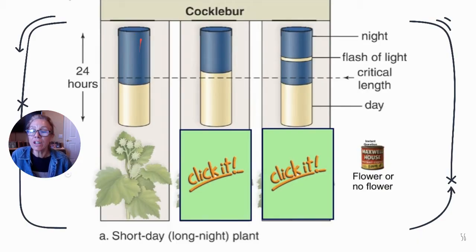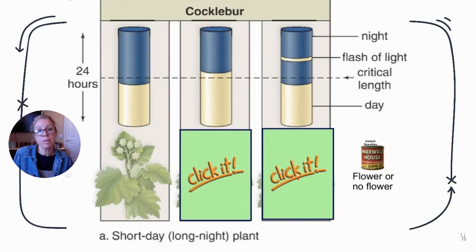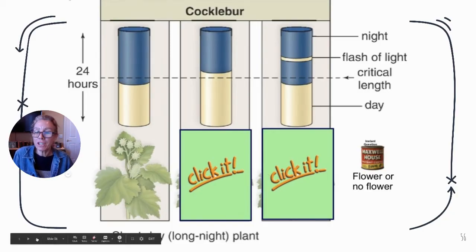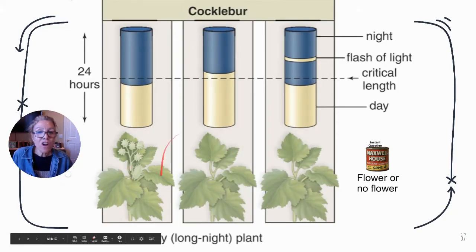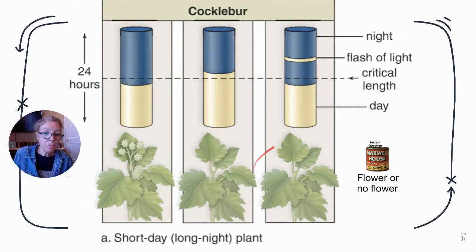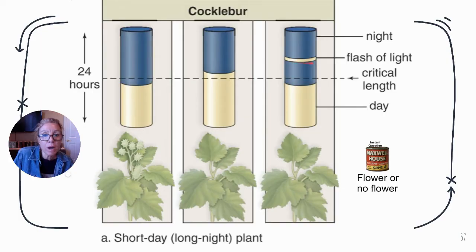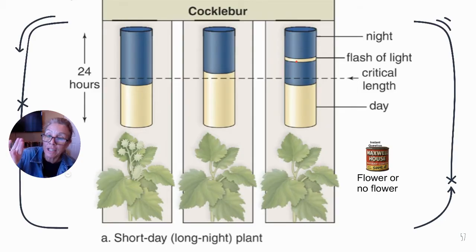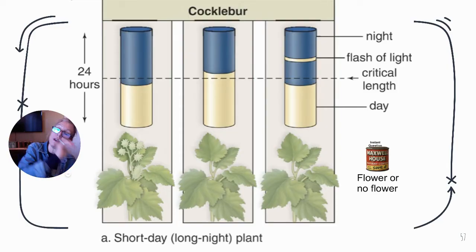Looking at the cocklebur as a short-day plant: plants that did not get a long enough night will not flower. Also, the night must be continuous — when interrupted by a flash of light in the middle of the night, it doesn't count. That flash of light starts converting PR to PFR, so the plant has not registered a long enough continuous night.